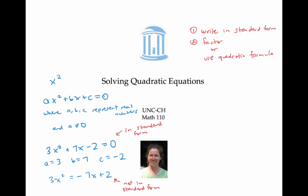In this video, we solved some quadratic equations by first writing them in standard form, and then either factoring or using the quadratic formula. In some examples, factoring doesn't work — it's not possible to factor the equation. But using the quadratic formula will always work, even if it's also possible to solve by factoring. So you can't really lose by using the quadratic formula; it's just sometimes faster to factor instead.